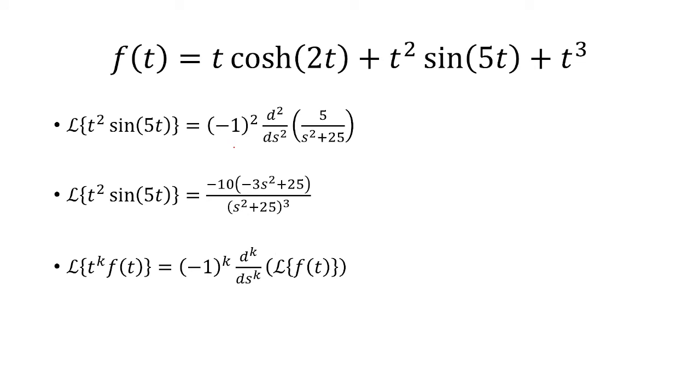Now let's find the Laplace transform of the first term, t times cosh of 2t. Here k equals 1, so it's negative 1 to the first power, which is just negative 1. Now we take the first derivative of the Laplace transform of cosh of 2t.